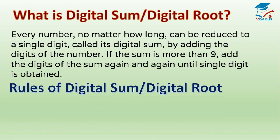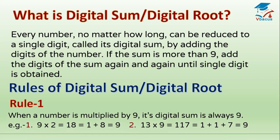Rules of the digital sum. Rule 1: When a number is multiplied by 9, its digital sum is always 9. For example, 9 times 2 is 18; 1 plus 8 equals 9. Second example: 13 times 9 equals 117; adding its digits again gives 9.